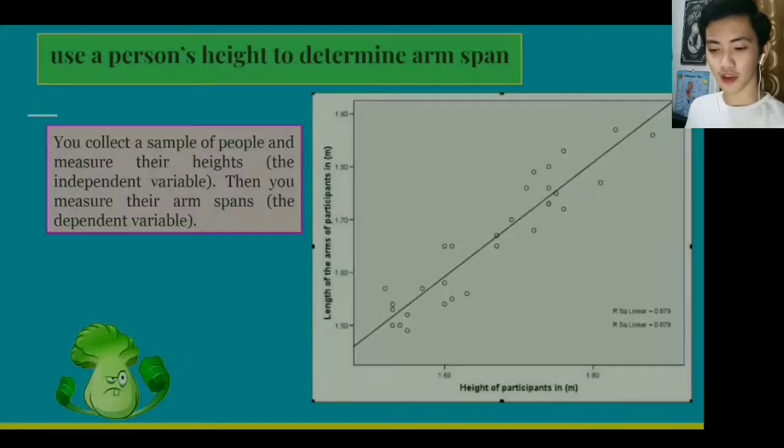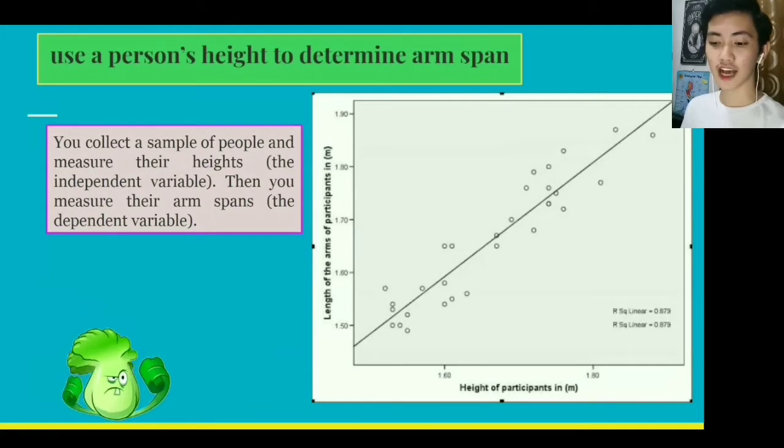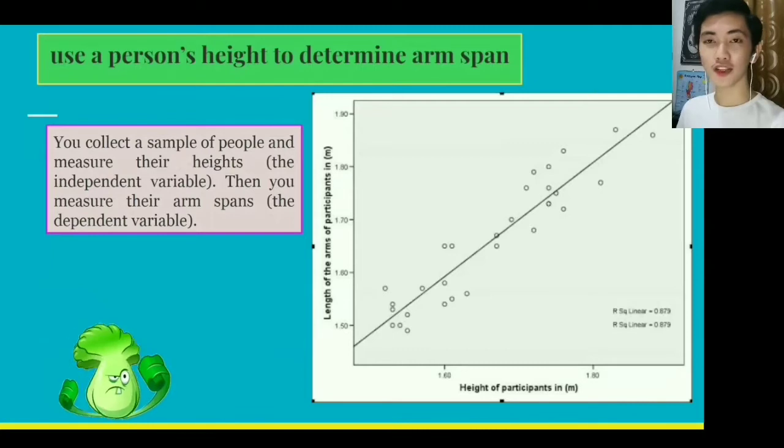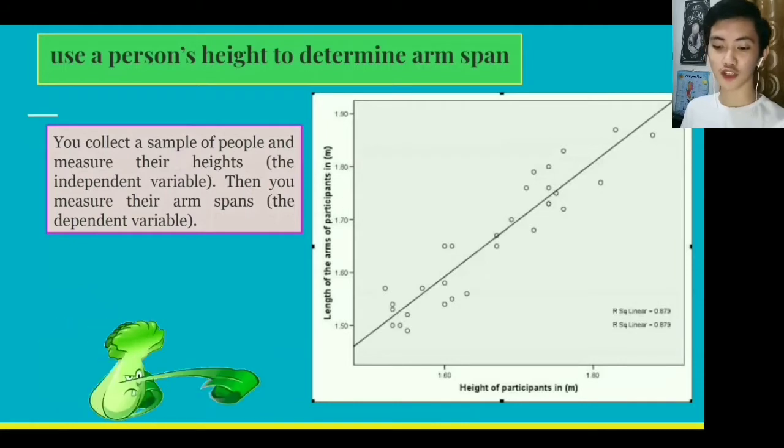For example, on the presentation or on our screen, you want to find out if you can use a person's height to determine arm span. You collect a sample of people and measure their height, which is our independent variable. You also measure their arm span, which is the dependent variable.